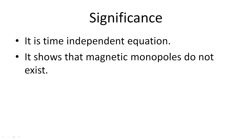Equation two is the differential form of Maxwell's second equation. Its significance: it is a time-independent equation, and it shows that magnetic monopoles do not exist. There is a basic difference between the integral and differential forms — the integral form tells us about the experimental point of view, while the differential form tells us about the theoretical point of view.